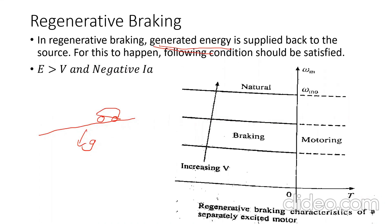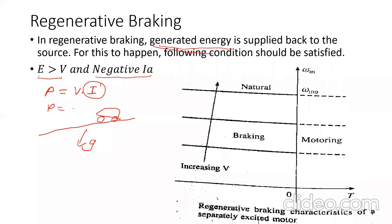The following conditions must be satisfied for regenerative braking to occur. First, the back EMF must be greater than the source voltage, and the current direction must be reversed. We know that power is given by V times I, so one quantity — either voltage or current — must be negative to reverse power flow. In this case, back EMF is made greater than supply voltage, due to which current flows in reverse direction. Current I becomes negative, so power will be negative, meaning power is flowing from motor to supply.